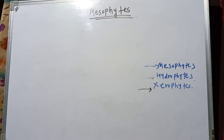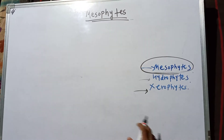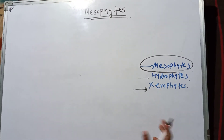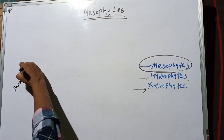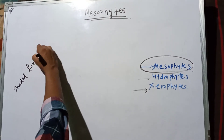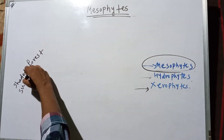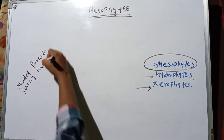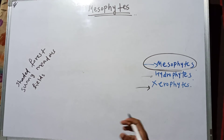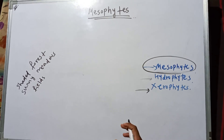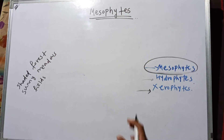Today we are going to discuss only mesophytes. Mesophytes are found in many places such as shaded forest areas or sunny meadows and fields. Most plants found in household gardens, parks, streets, and general public areas are mesophytes.